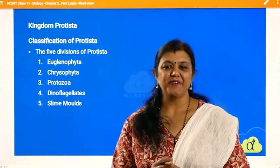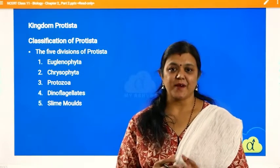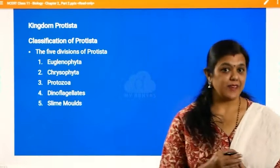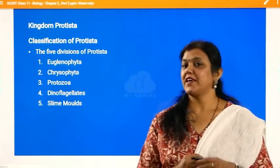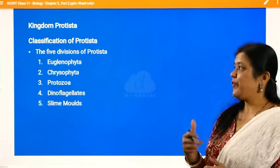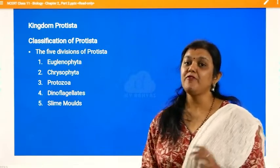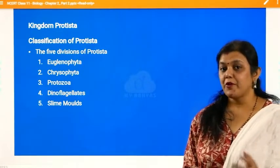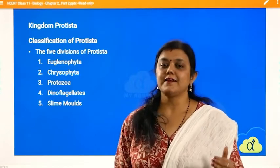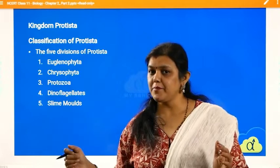Hello students, welcome back. We are discussing the second chapter of standard 11th and we are doing the classification. We finished with the kingdom monera and we are right now talking about kingdom protista. Protistas are the unicellular eukaryotic organisms and they are considered as the link between the prokaryotes and the funguses, plants and animals.